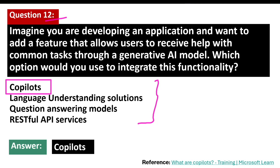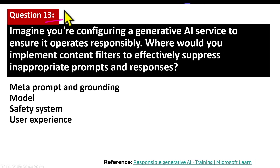The second real-world example is Microsoft Copilot. Microsoft Office Copilot assists users with applications like Word, Excel, and Outlook. It can help draft documents, analyze data, generate presentations, and manage emails. For instance, in Word, it can help create reports by suggesting relevant content and formatting. Question number 13.